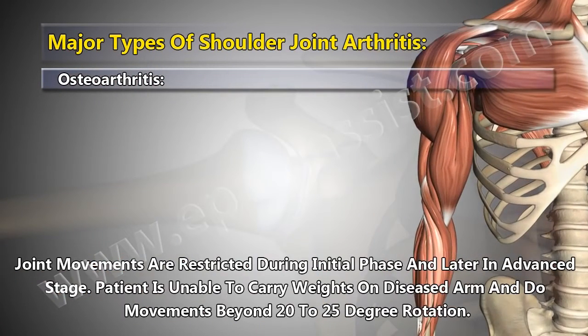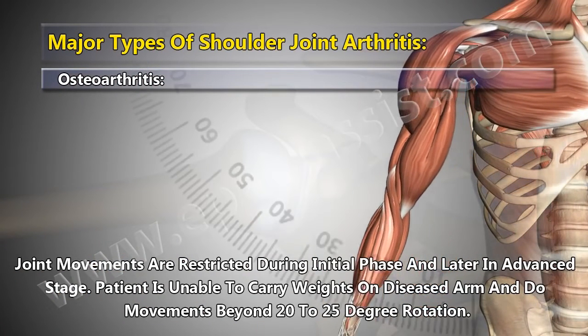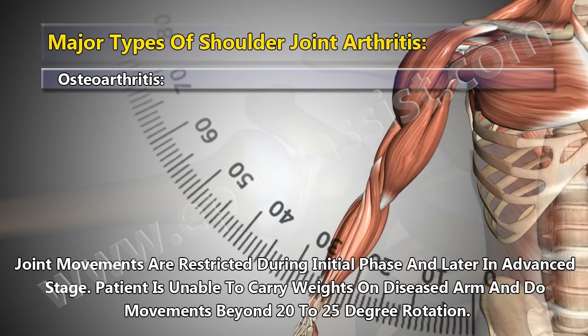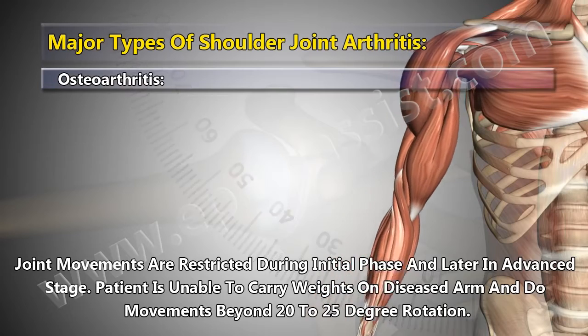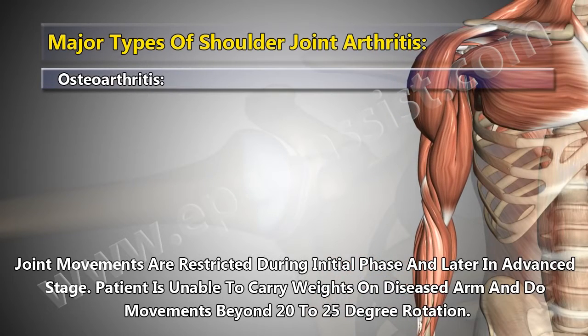Joint movements are restricted during the initial phase and later in the advanced stage. The patient is unable to carry weights on the diseased arm and cannot perform movements beyond 20 to 25 degrees of rotation.